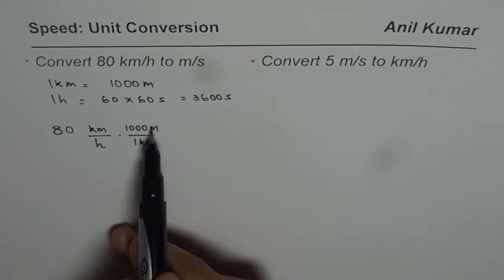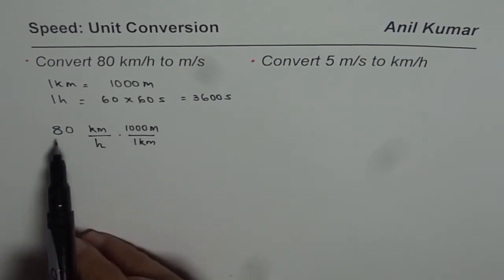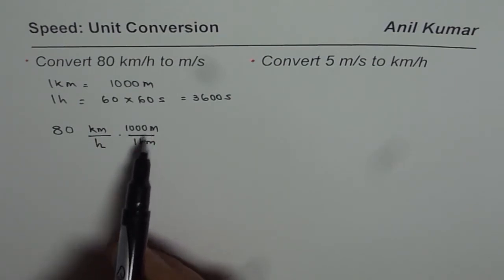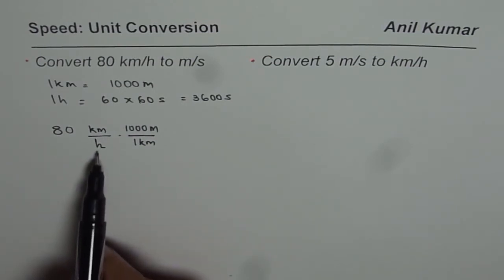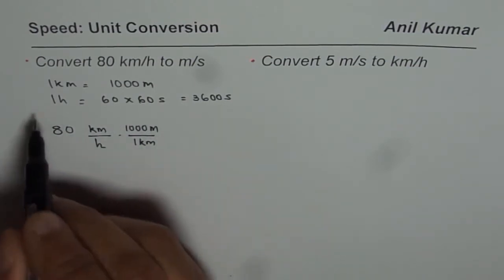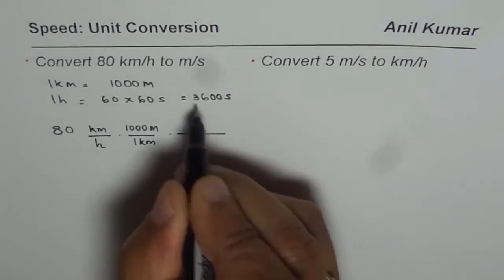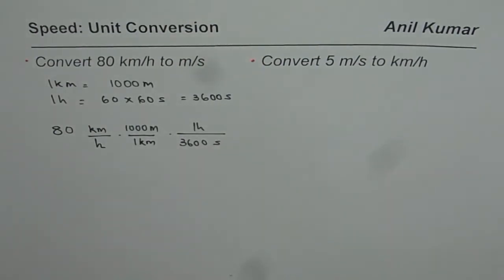Since 1000 meters and 1 kilometer is exactly the same, you're actually multiplying by 1 and so you're not changing the value. So 80 kilometers per hour times 1000 meters divided by 1 kilometer. Now you need to replace hour by seconds. And you know 1 hour, so we'll write that in the numerator, 1 hour equals 3600 seconds.